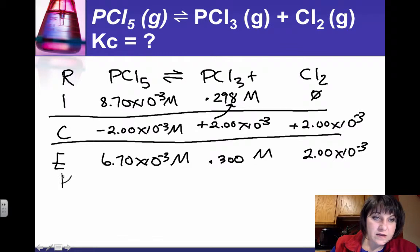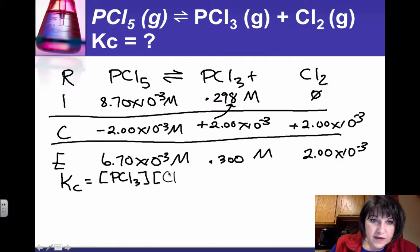So that's my concentrations of everything at equilibrium, and my equilibrium expression in Kc is with square brackets, phosphorous trichloride concentration times the chlorine gas concentration divided by the concentration of phosphorous pentachloride.